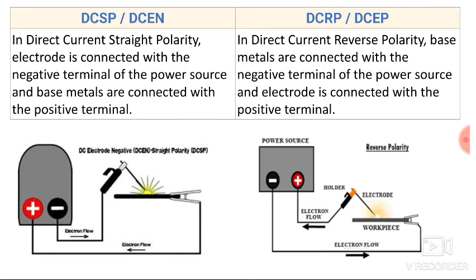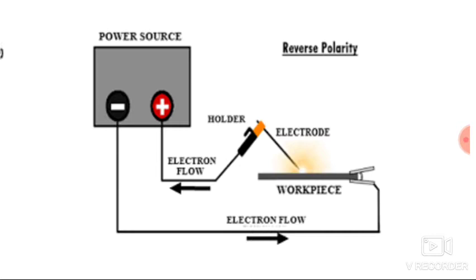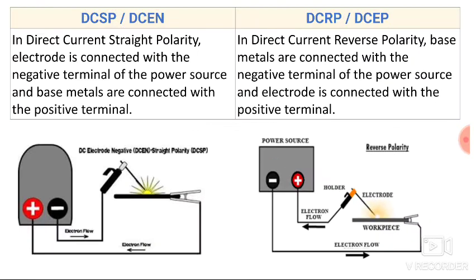In direct current reverse polarity, the base metal is connected with the negative terminal of the power source and the electrode is connected with the positive terminal. Here you can see the power source has two terminals — the electrode is connected with the positive terminal whereas the work piece is connected with the negative terminal. Hence it is known as reverse polarity.